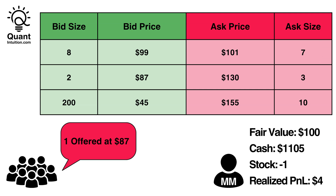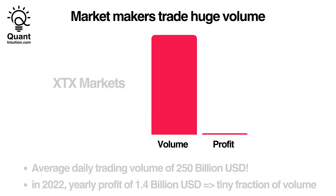Last but not least, consider another market participant wanting to sell one share of this stock. Similar to before, our bid is hit and we buy the share for $99. This fully neutralizes our position and we now have $6 more in realized profit compared to the beginning. To recap, where does the money come from? We matched different buyers and sellers through time and size, and we took on the risk of the asset moving in price in between. Receiving a small premium for such a service does seem reasonable. Note that we stepped through these trades one by one, which is a reasonable approximation of reality — just keep in mind that in reality such trades in liquid securities happen in fractions of a second.